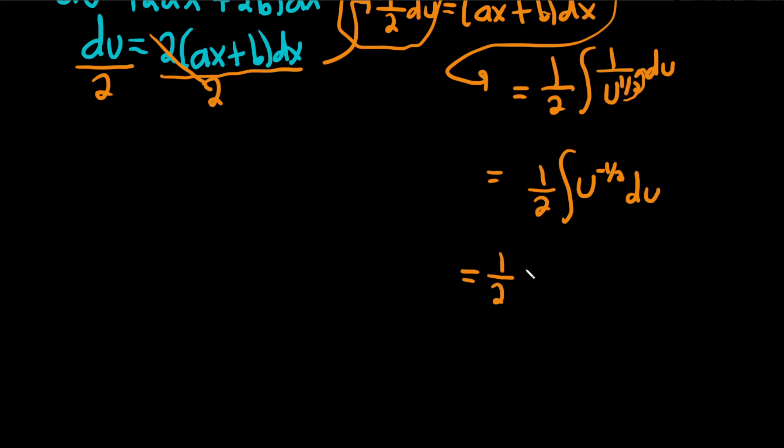So 1 half u to the, let's see, we're taking negative 1 half and we're adding 1 to that. So that's going to be negative 1 half plus 1 is 1 half. Then we're dividing by 1 half as well. And then we have the plus c.